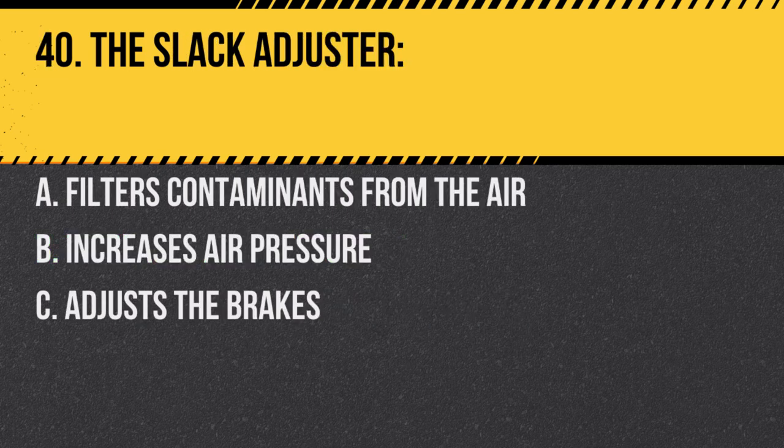Question 40. The slack adjuster: A. Filters contaminants from the air. B. Increases air pressure. C. Adjusts the brakes. Answer C. Adjusts the brakes. It ensures the brakes apply properly.